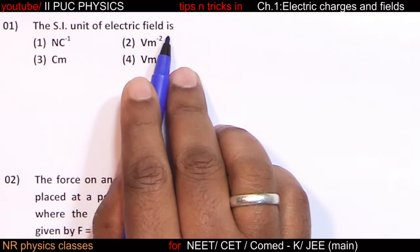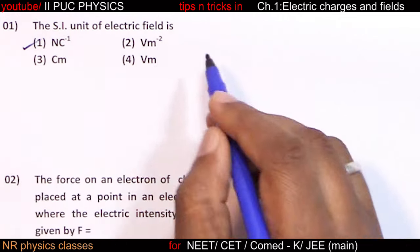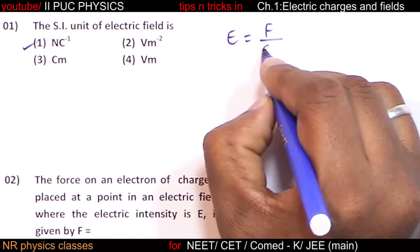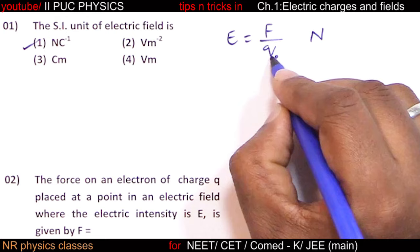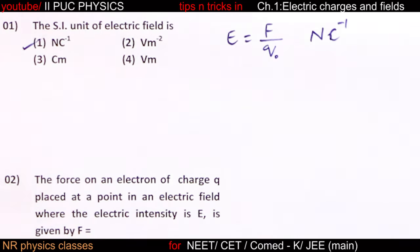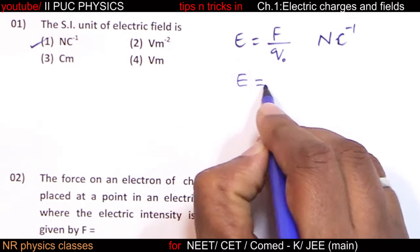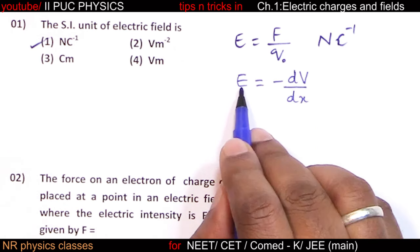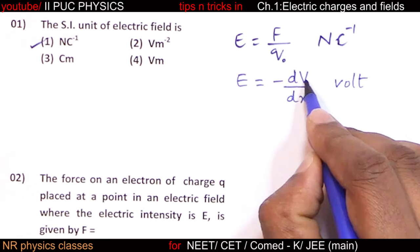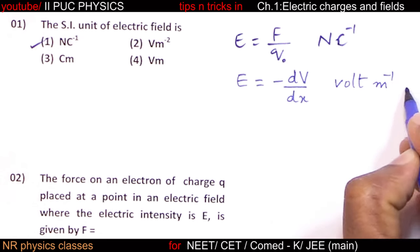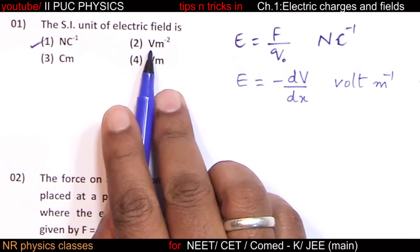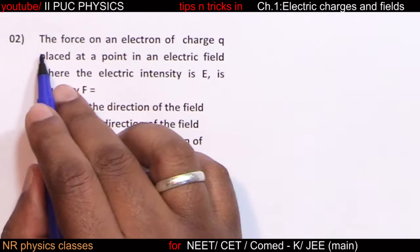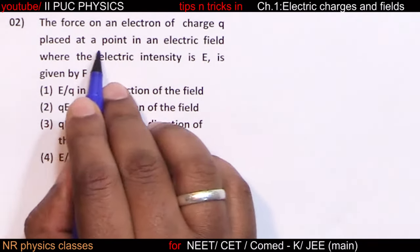The SI unit of electric field is Newton per Coulomb. Electric field equals force per unit charge, so it is Newton per Coulomb. Alternatively, electric field is also equal to minus dV by dx. Using this formula, the unit of electric field is volt per meter. Therefore, Newton per Coulomb equals volt per meter.